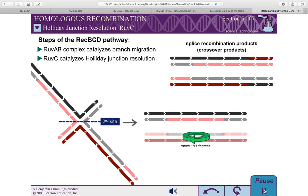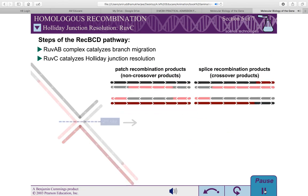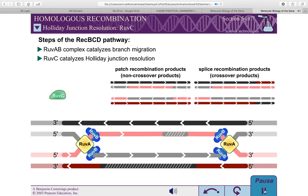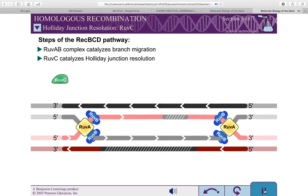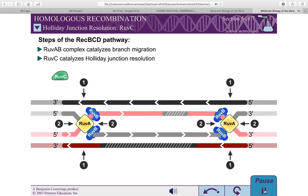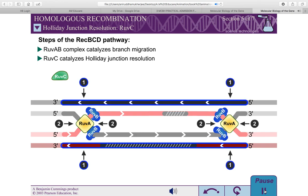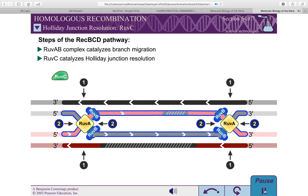In the REC-BCD pathway, this step is catalyzed by the RUVC endonuclease. For each Holliday junction, there are two possible cleavage sites. Site 1 consists of the two DNA strands that have not crossed over. Site 2 consists of the two DNA strands that have crossed over.